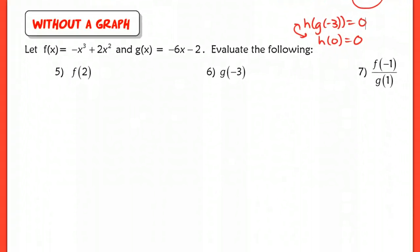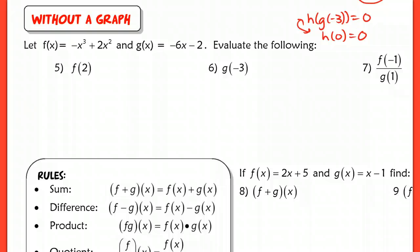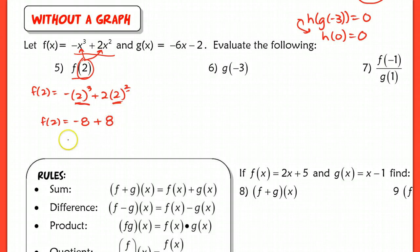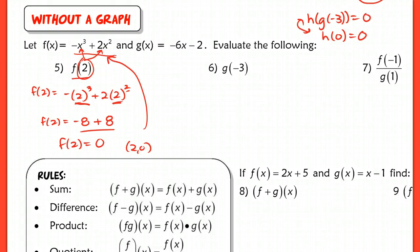Without a graph, all you want to do is substitute that value in for x. In this first example, if f of x is equal to negative x cubed plus 2x squared and I want to evaluate f of 2, I simply plug in 2 for the x's in that function. So f of 2 is equal to negative 2 cubed plus 2 times 2 squared. Order of operations: 2 cubed is 8, take the negative, giving negative 8, plus 2 squared is 4 times 2 is 8. So f of 2 equals zero, meaning the point (2, 0) would be on the graph.